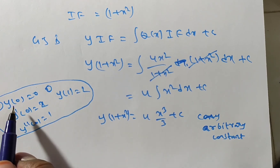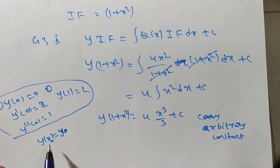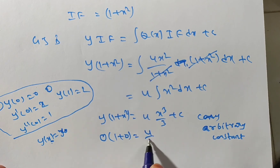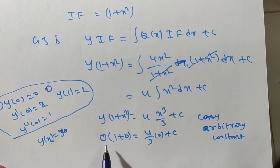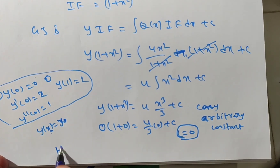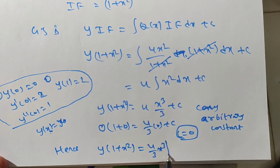Now we have y(0) = 0, meaning at x = 0, y = 0. Substituting x = 0 and y = 0 into y(1 + x²) = 4x³/3 + c: we get 0×(1 + 0) = 4/3×(0) + c, which gives 0 = 0 + c, therefore c = 0.